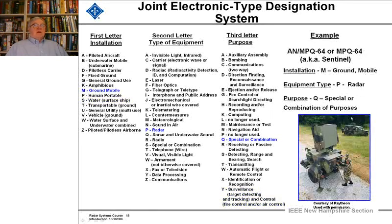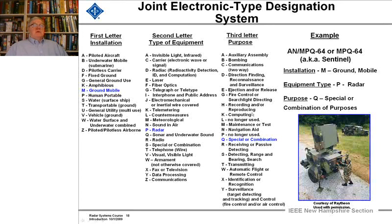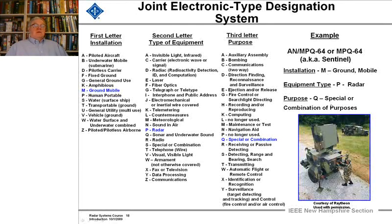Finally, the MPQ-64, also known as the Sentinel radar. It's a mobile (M), radar (P), special purpose or combination of purposes (Q) — the 64th MPQ designation built. Sometimes people might use Q because they don't want you to know what it really does.